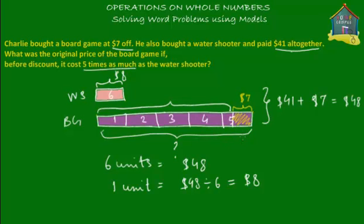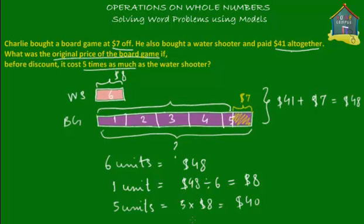Then how much did the board game cost before the discount? Before the discount the board game cost five units — that's the original price. So the original price is five units, which is five times $8, and that equals $40. The original price of the board game is $40, which is what we were asked to find out.